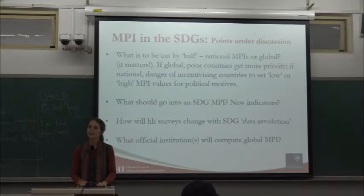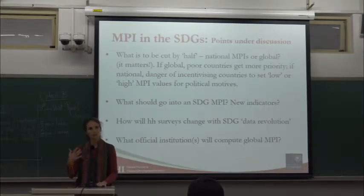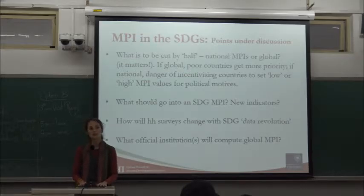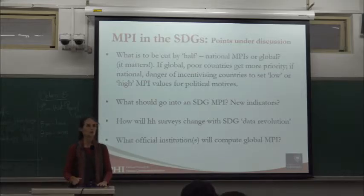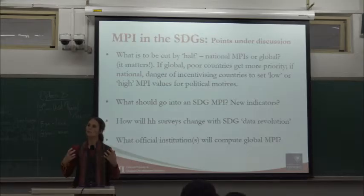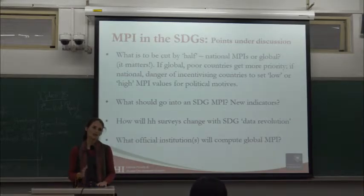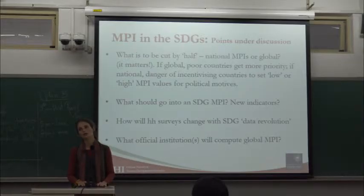In either case, there's a question of what indicators should go into an MPI for the SDGs — for countries that don't have one — and for the global MPI: should it drop flooring as Jeff Sachs suggested, include violence as others suggested, or include work and labor? That entails changes in surveys. We are in a time of data revolution — the World Bank has promised poverty surveys every three years — and what multidimensional indicators will be contained will affect what we can measure. Finally, which institution will undertake the burden of measuring and analyzing the global MPI each year?